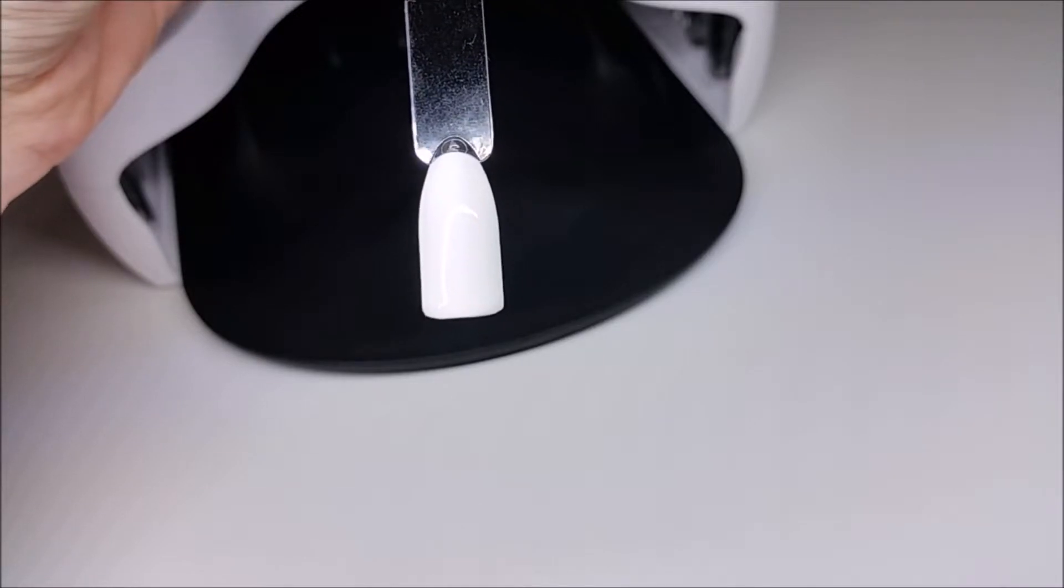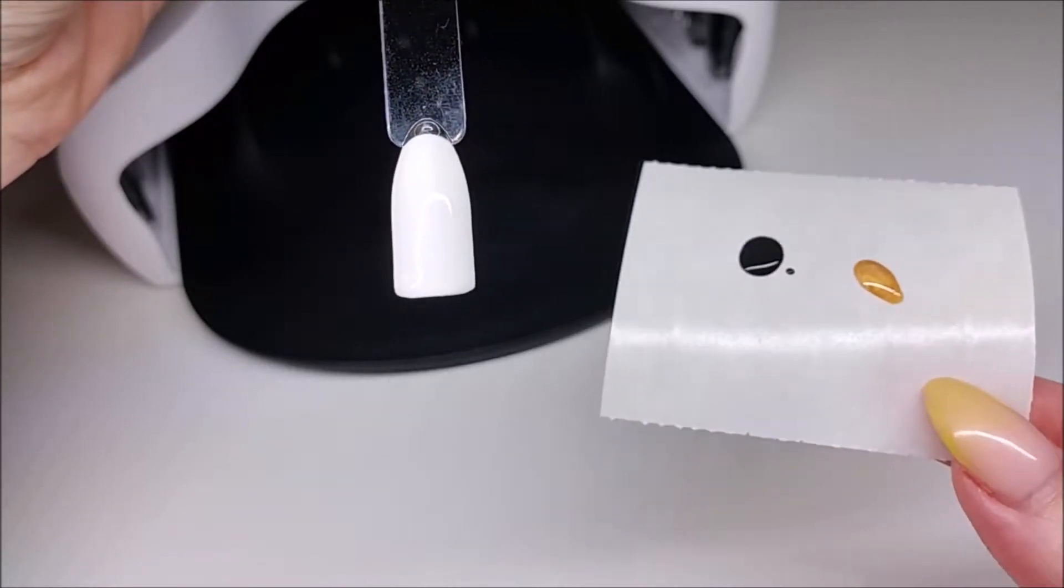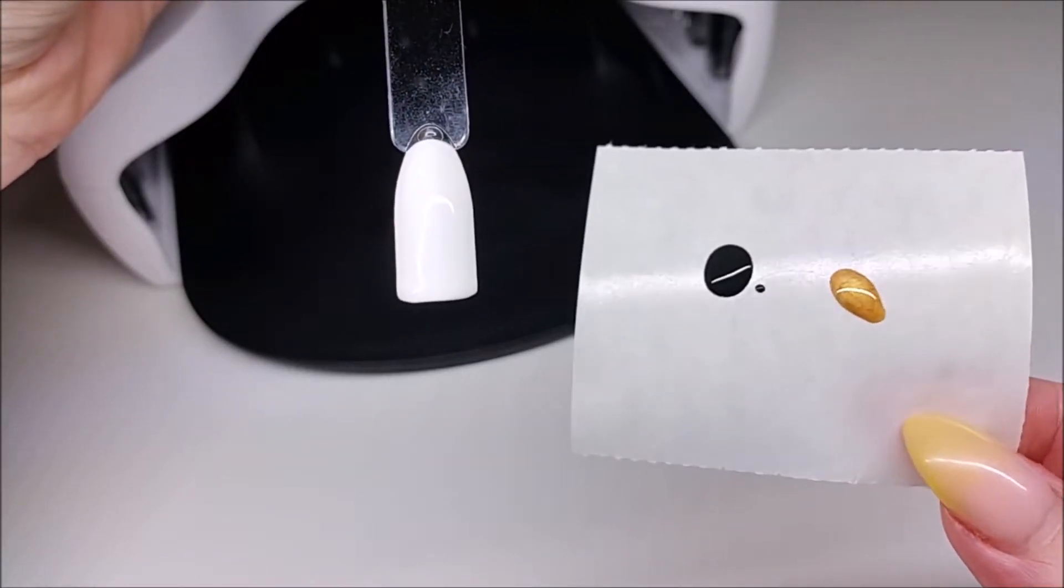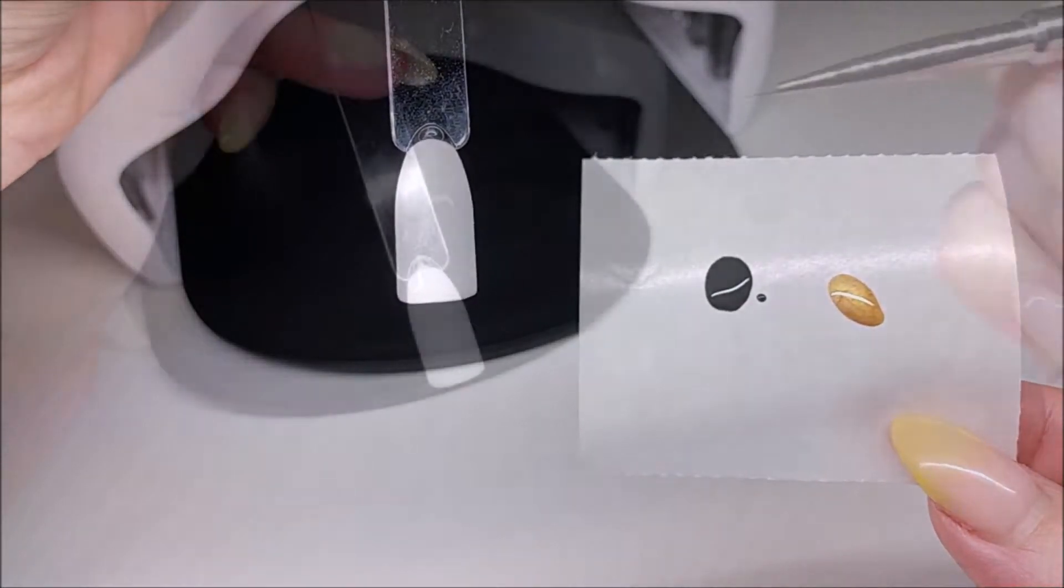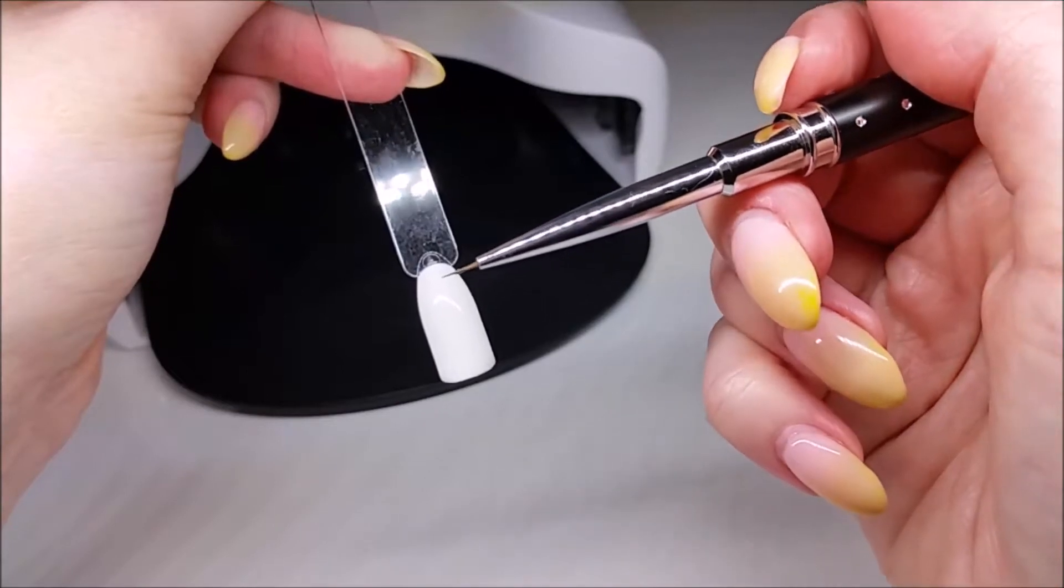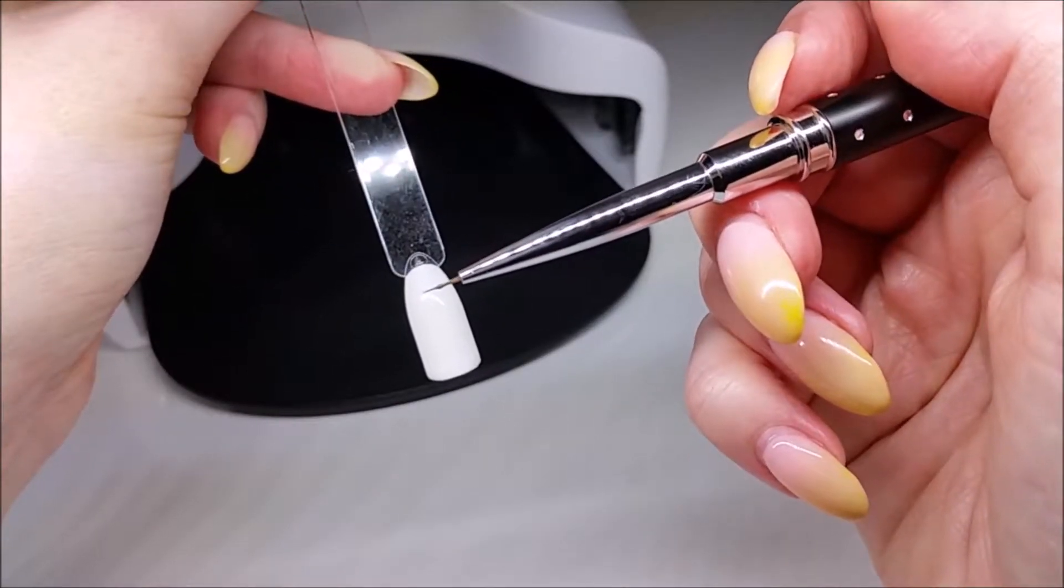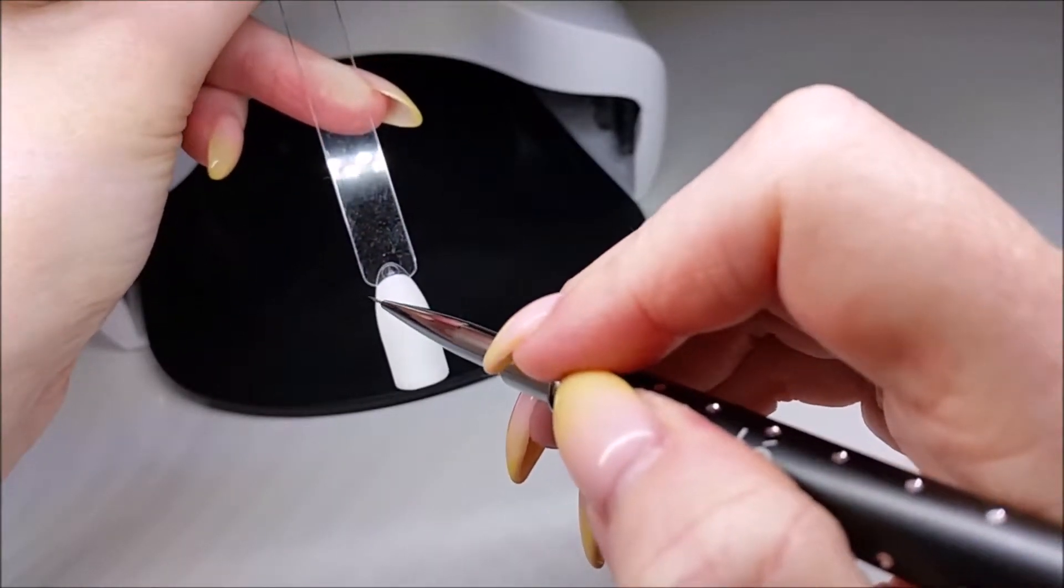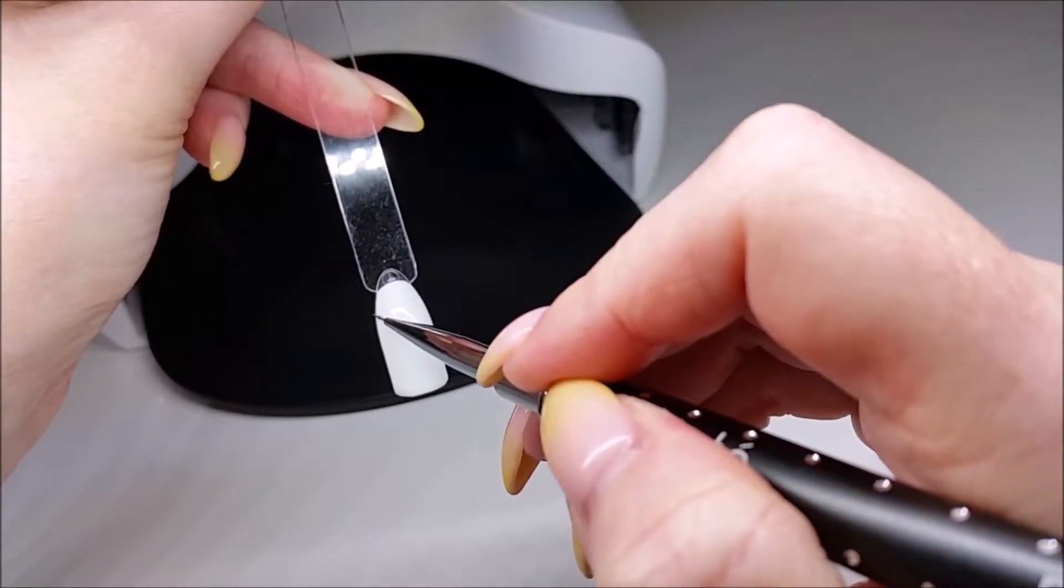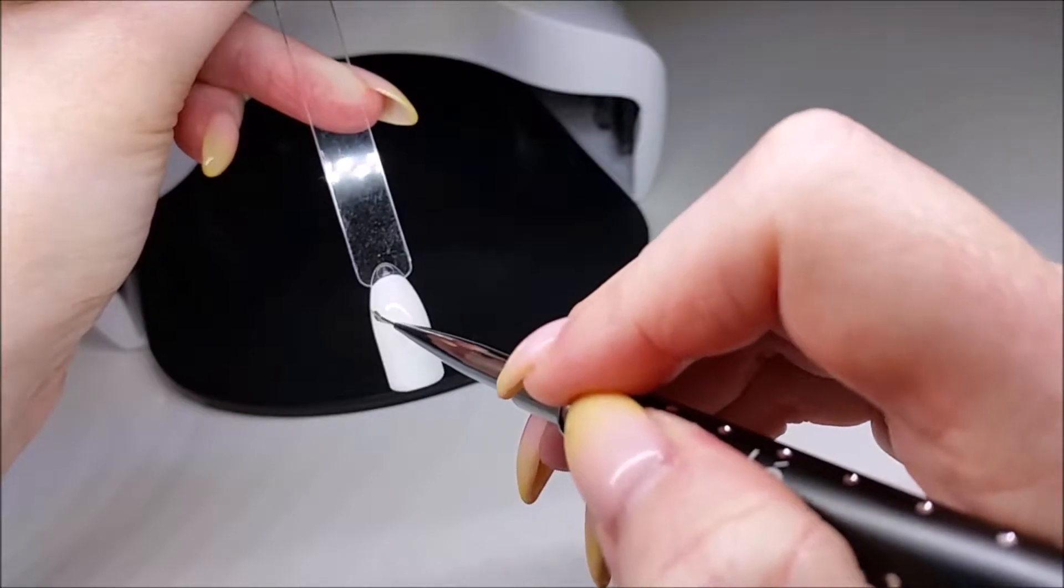So the next step will be painting on the marbling. So as you can see I've got my little palette, and I've put two little blobs of the marbling colors that I'm going to be using. So I've got a little bit of paint on my brush, a little bit of dark grey gel color. And I'm just going to go in and start painting a design into the uncured top coat.